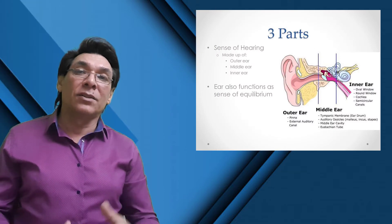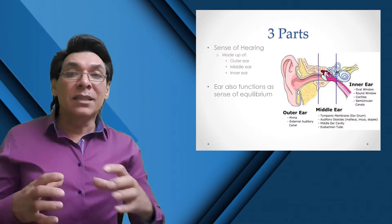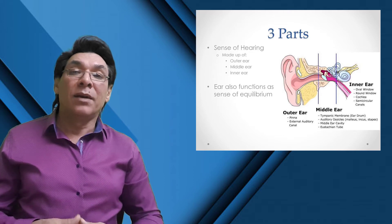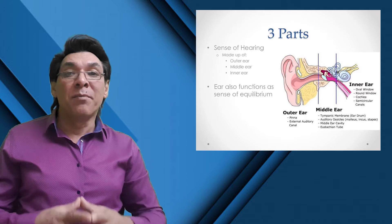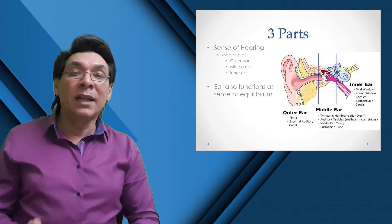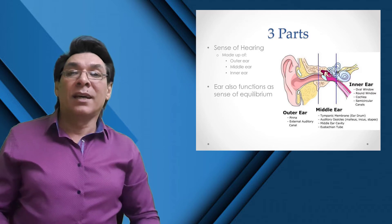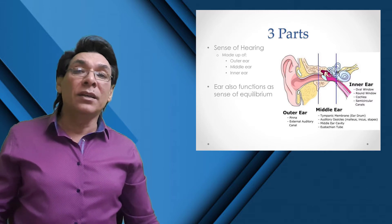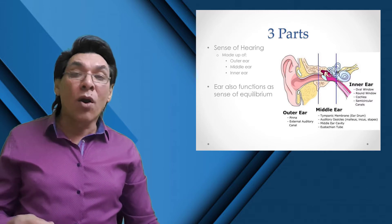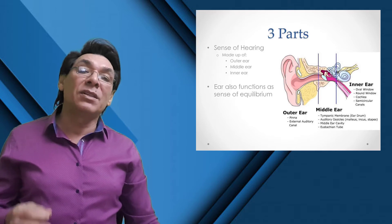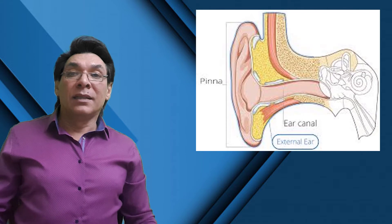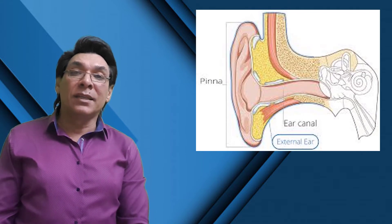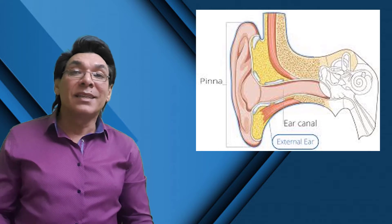The external ear consists of the auricle (pinna) and external auditory meatus. The middle ear consists of the tympanic membrane, malleus, incus, and stapes, the tympanic cavity, and the Eustachian tube. The inner ear consists of the oval window, cochlea, vestibule, and semicircular canals.